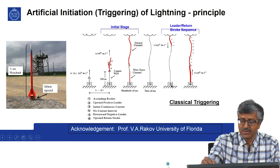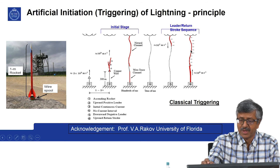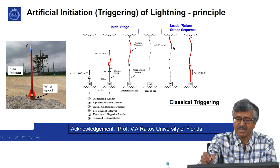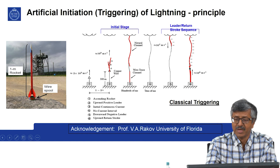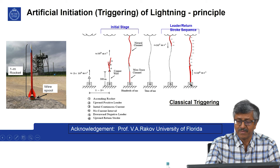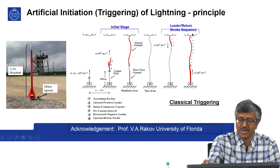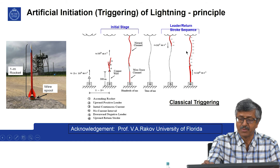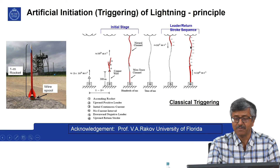Then you have a return stroke. The bright light we see is not from the part coming down, but from the part going up — because earth, being conducting, can collect a large amount of charge in a short time, and you have a potential wave going upward at one-third to one-half the speed of light. This upward-going part is what we normally see as a bright flash, and the expansion and later collapse of air appears as thunder. This is called the return stroke.